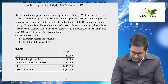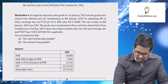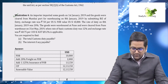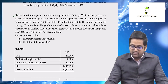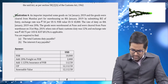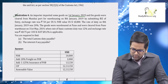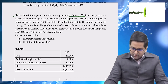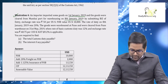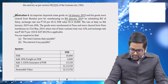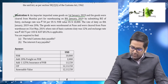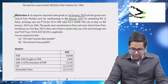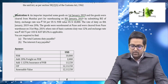Illustration 4: An importer imported some goods on 1st January 2019 and the goods were cleared from Mumbai port for warehousing on 8th January 2019. Bill of entry was submitted on that date. The exchange rate on that day was ₹50 per US dollar. The FOB value is US $10,000 and the rate of duty on 8th January 2019 was 20 percent.